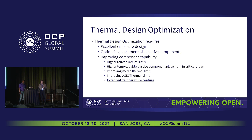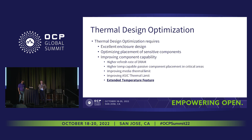In terms of thermal design optimization we have many things that we're trying to optimize: the enclosure, the component placement, and the component capability. Within the component capability we have many things we're also trying to optimize, but the main thing we're looking at today is the extended temperature feature. This enables up to 80 degrees C touch temperature on the system.